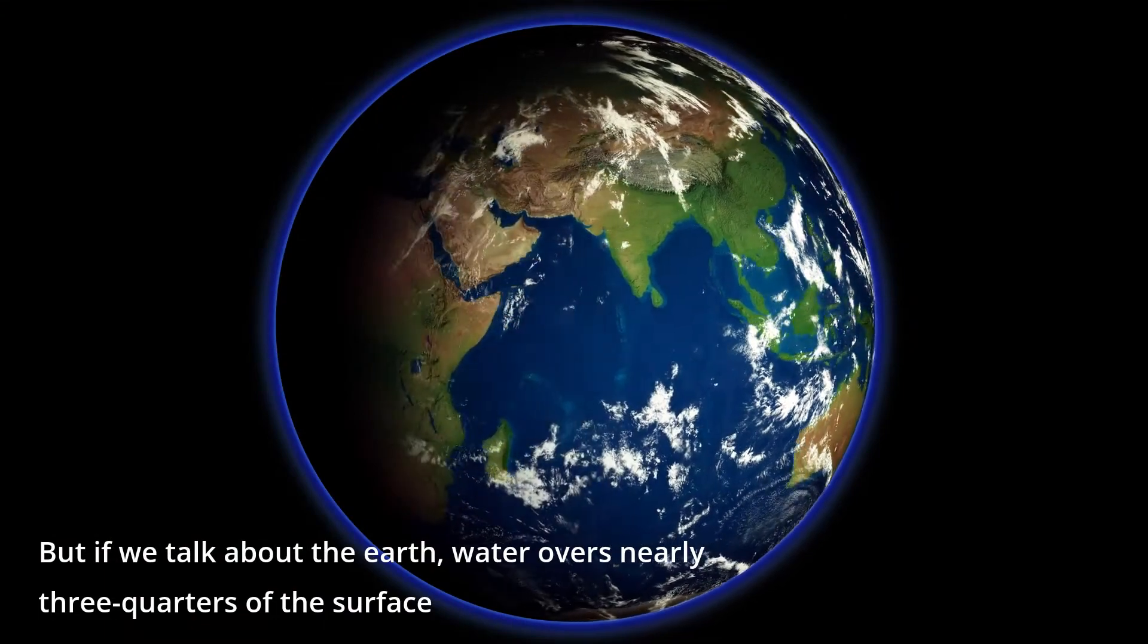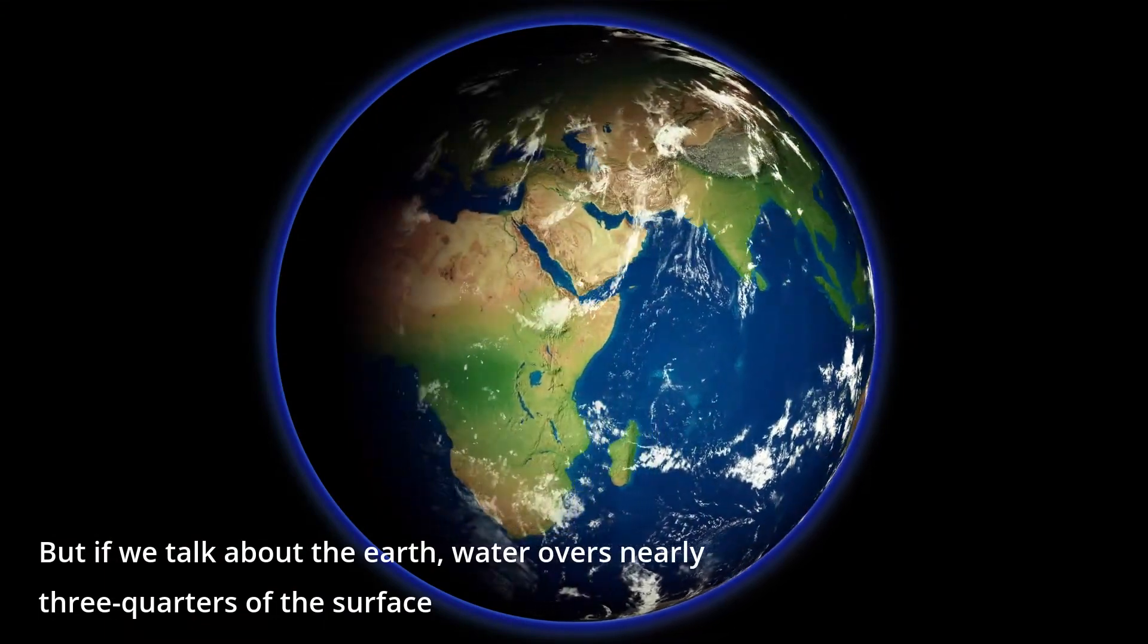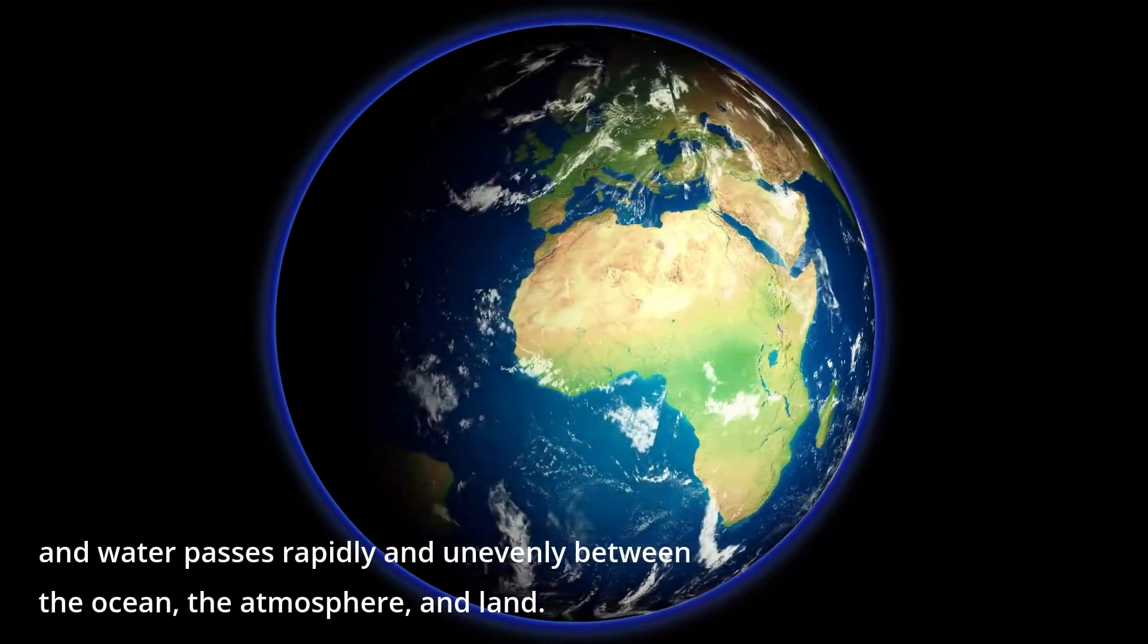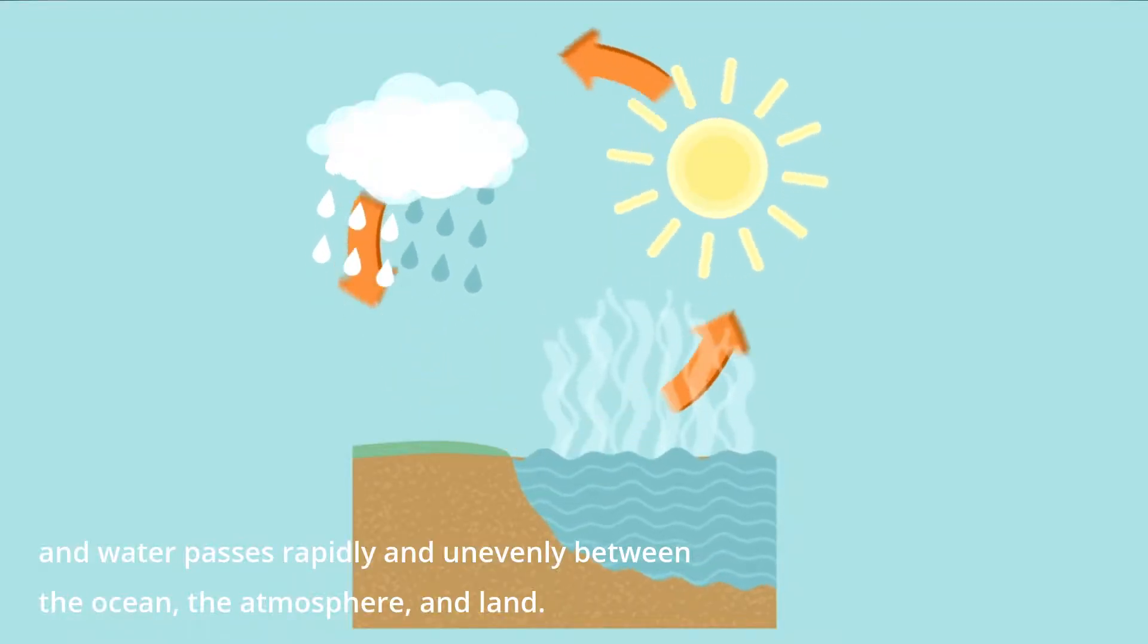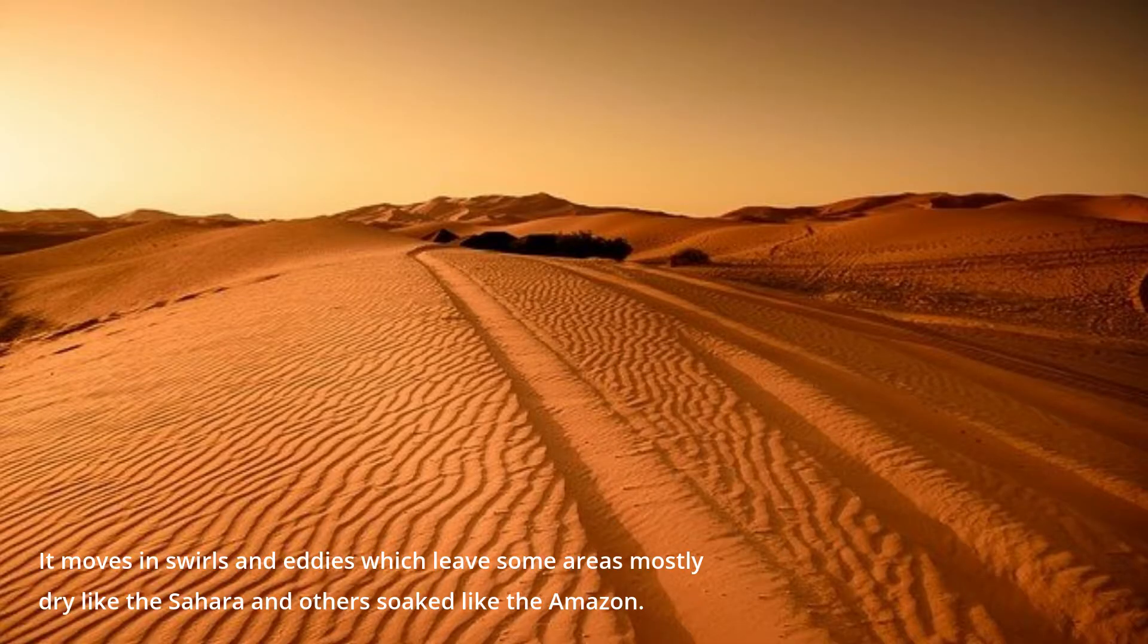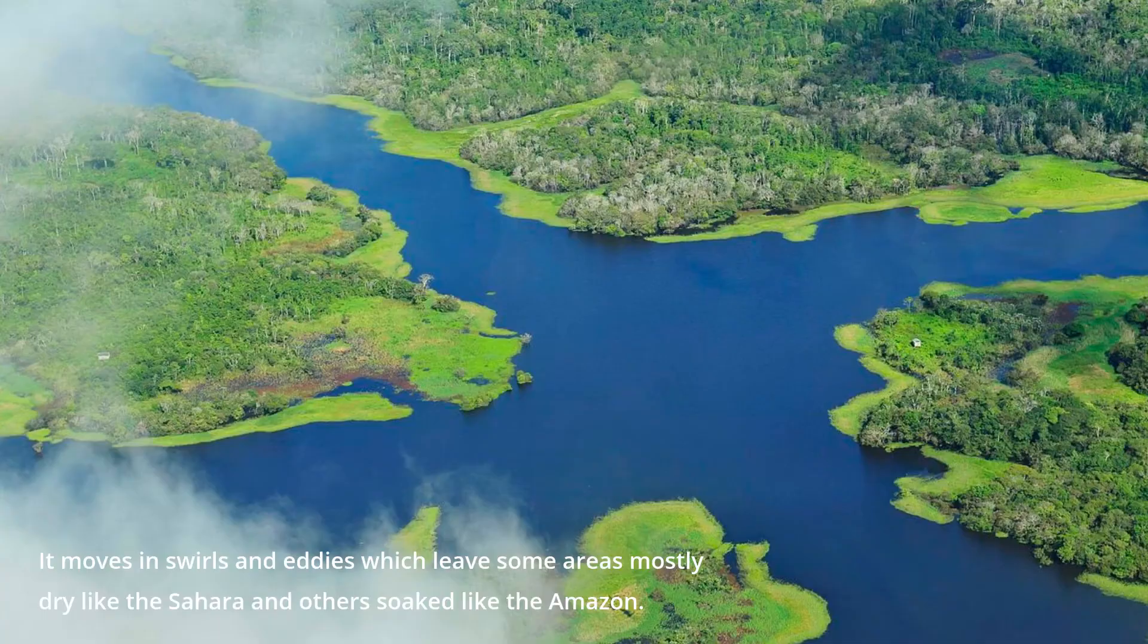But if we talk about the Earth, water covers nearly three-quarters of the surface and water passes rapidly and unevenly between the ocean, the atmosphere, and land. It moves in swirls and eddies which leave some areas mostly dry like the Sahara and others soaked like the Amazon.